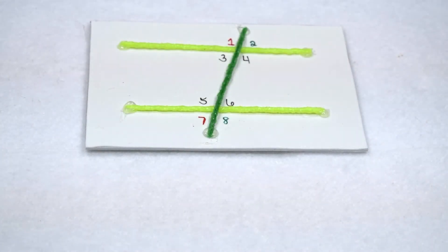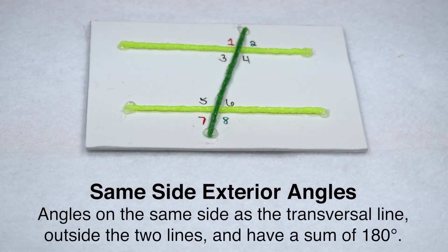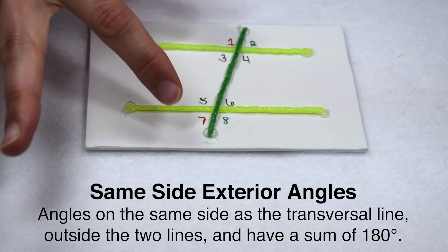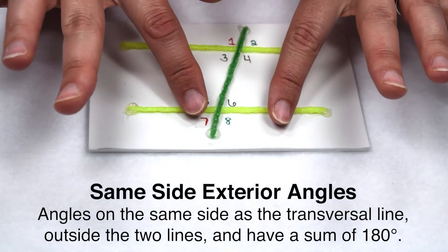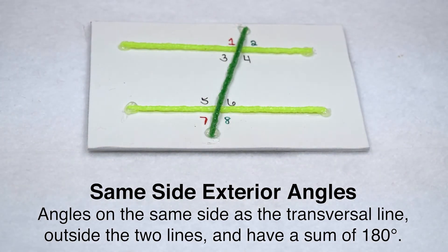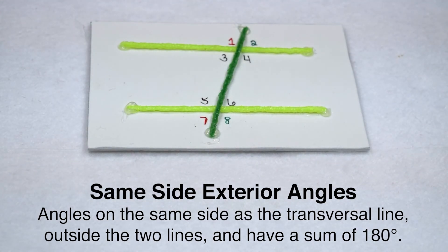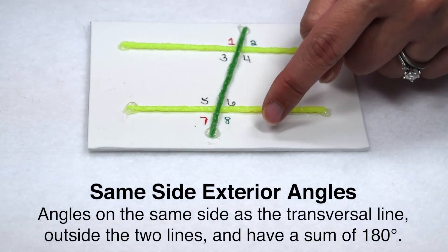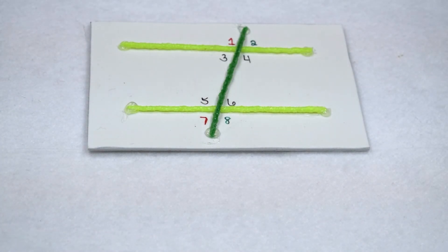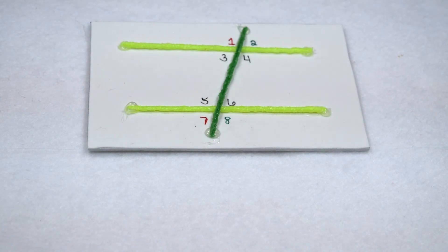Our two parallel lines cut by a transversal also form same side exterior angles. Same side exterior angles are going to be on the same side of the transversal but now they're going to be outside our parallel lines. One set of same side exterior angles would be angles 1 and 7, and our other set would be angles 2 and 8. Now that we know which angles have a relationship between them, we can use those relationships to find missing angle measures without having to take out a protractor and actually measure them.